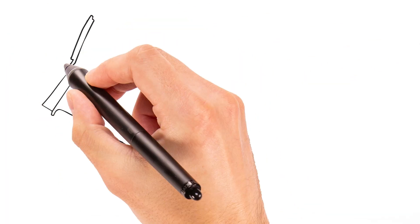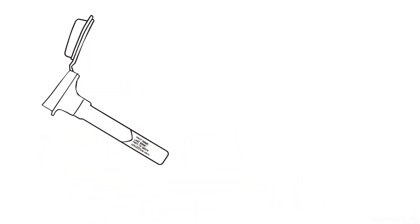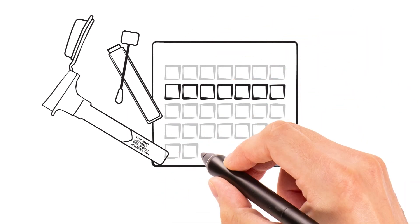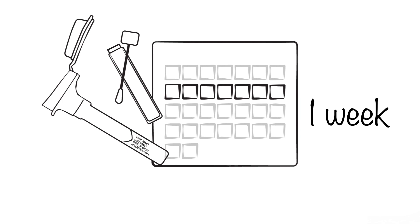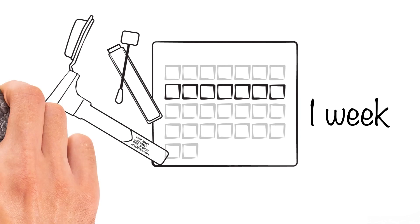Sometimes, a saliva sample is done by spitting in a tube. Other times, it is done by a swab rubbed against the inside of the mouth. If it has been more than one week after your child's care team ordered the test and you have not received a kit, please contact the team.